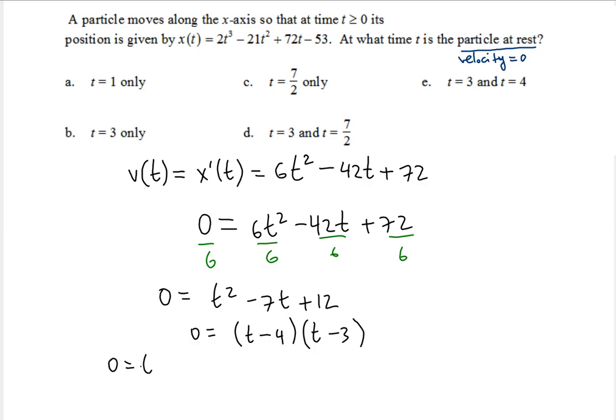So that gives you two possibilities: t - 4 being set to 0, and t - 3 being set to 0. Add 4 on all sides, add 3 on both sides. So in the first case, t = 4. The second case, t = 3.